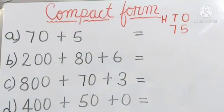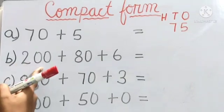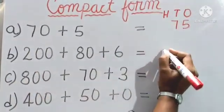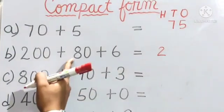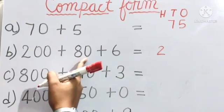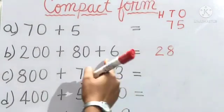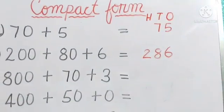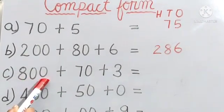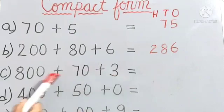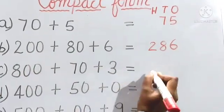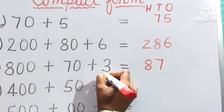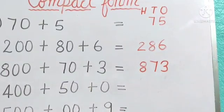Question 5: 200 plus 8 tens plus 6. 200 means 2 is in the hundreds place. 8T means 8 tens, in the tens place. And 6 is in the ones place. So the number is 286. Question C: 8 hundreds plus 7 tens plus 3. 8 is in the hundreds place, 7 is in the tens place, and 3 is in the ones place. So the number is 873.